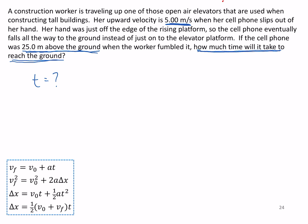The period of time we're looking for is—okay, the cell phone is dropped here at that moment. It's moving upward along with the construction worker and the elevator at five meters per second. That's going to be the initial velocity of the cell phone. So when she drops it, well now it's just under the influence of gravity.